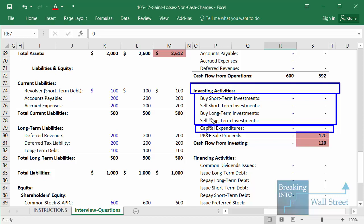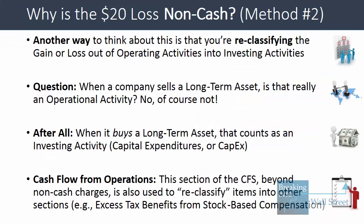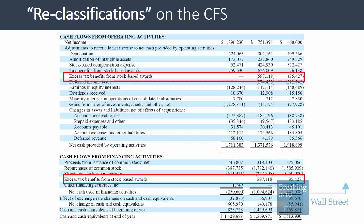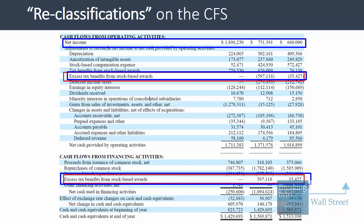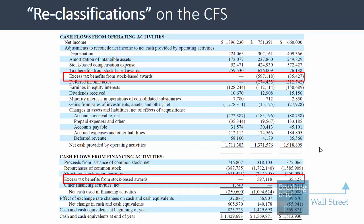So when you buy a long-term asset it shows up in investing, and when you sell a long-term asset, everything should also show up there. The cash flow from operations section, beyond showing non-cash charges, changes in working capital, and net income, is also used to reclassify items into different sections. One good example is excess tax benefits from stock-based compensation. Looking at Yahoo's financial statements, they're saying these excess tax benefits are more of a financing item — so they take them out within cash flow from operations and add them back in cash flow from financing activities to reclassify them.